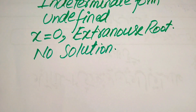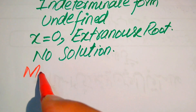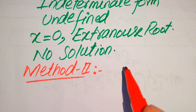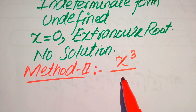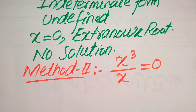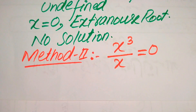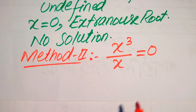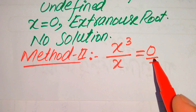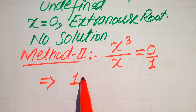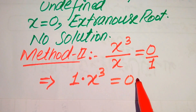From the first method, we conclude that the given equation has no solution. Now we solve this problem using the second method. We copy down the given equation: x cubed divided by x squared equals 0. Here the denominator on the right-hand side is 1, so we cross-multiply: 1 times x cubed equals 0 times x squared.